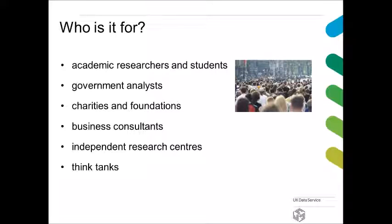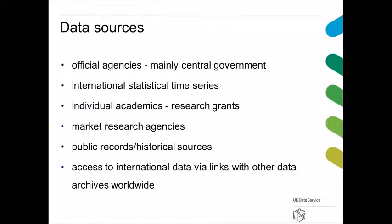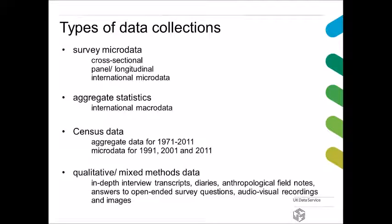It is for government analysts, charities and foundations, business consultants, independent research centers, and think tanks. Our data sources are official agencies, mainly central government like the ONS. The data come from international statistical time series, but also from individual academics who hold an ESRC research grant. The data come from market research agencies, public records, historical sources, and we also have access to international data via links with other data archives worldwide. The types of data collections we hold are surveyed microdata, aggregate statistics, census data, and qualitative and mixed methods data.